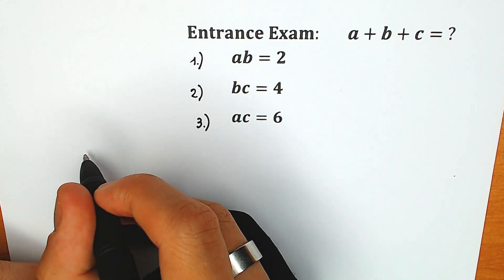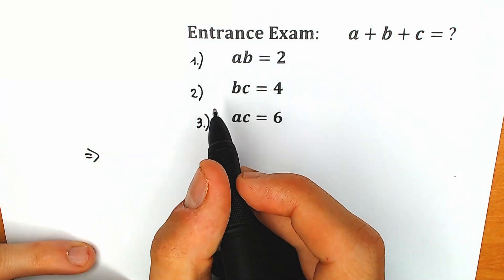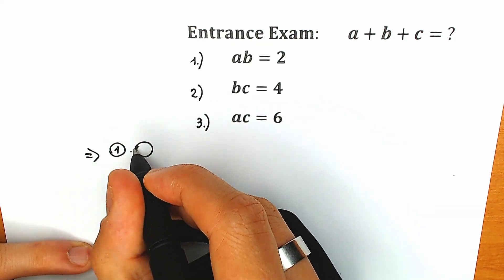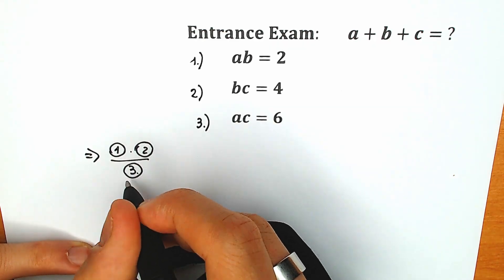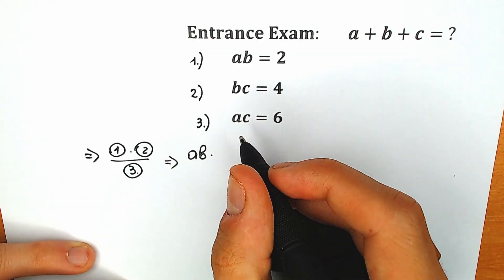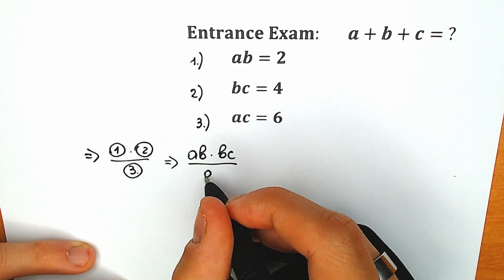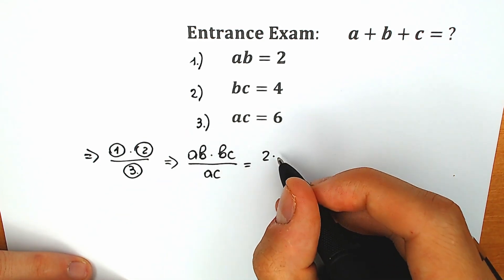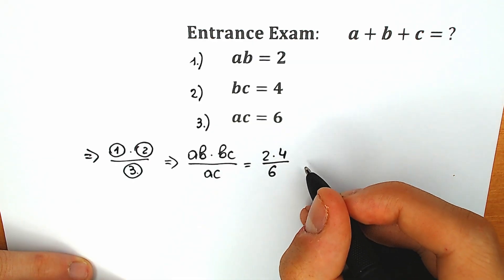At the first step, let's use this combination: multiply the first equation by the second one, and divide it by the third one. So we have ab times bc, divided by ac. Talking about the constant values: ab equals 2, bc equals 4, and we divide by ac equals 6.